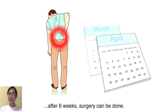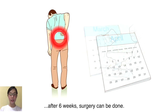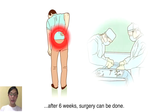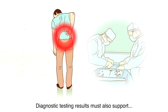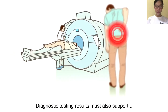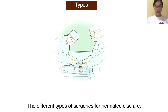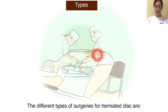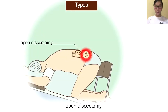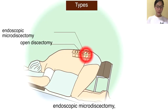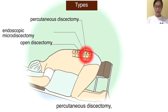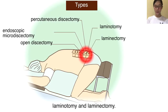In many cases, herniated discs recover without any intervention or through medical treatment. If non-surgical treatment has not improved the condition of the disc after six weeks, surgery can be done, provided that diagnostic testing results also support that the herniated disc is treatable with surgery. The different types of surgery for herniated disc are open discectomy, endoscopic microdiscectomy, percutaneous discectomy, laminotomy, and laminectomy.